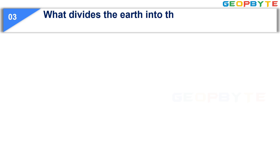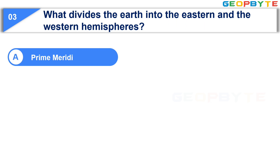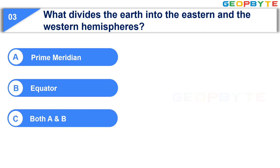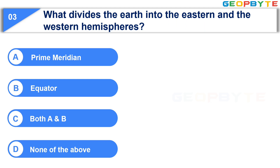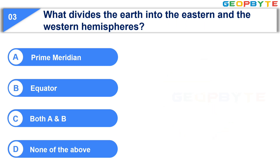What divides the Earth into the eastern and the western hemispheres? Option A: Prime Meridian. Option B: Equator. Option C: Both A and B. Option D: None of the above. Your time starts now. Your time is up and the correct answer is Option A: Prime Meridian.